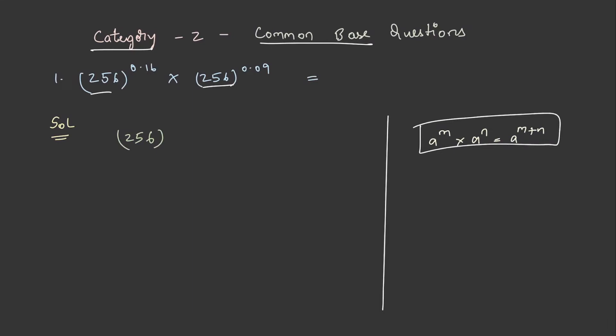Therefore, it becomes 256 power 0.16 plus 0.09, and this becomes 256 power 0.25. And 0.25 can be written as 25 by 100, and this changes to 256 power 1 by 4. And 256 can be written as 4 power 4, power 1 by 4. And a power m whole power n is equal to a power mn.